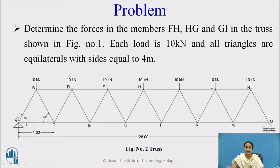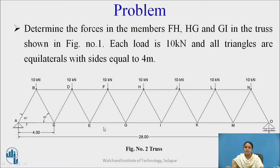If you consider the method of joint for large trusses, it will be more time-consuming — you have to go joint by joint: first joint A, then joint B, C, D, and so on. For this type of truss which is symmetrical in geometry and where equal loads of 10 kN act at all joints, the truss is symmetric about the y-axis, so we will go directly for the method of section.